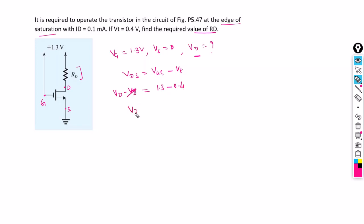In the question, the drain current is given as 0.1 milliamperes, which means drain current of the transistor is 0.1 milliamperes. We can see in the circuit that Rd and this transistor are connected in series.